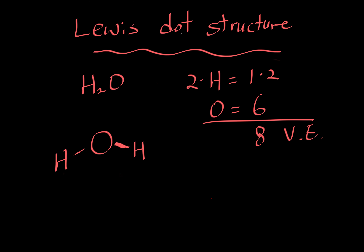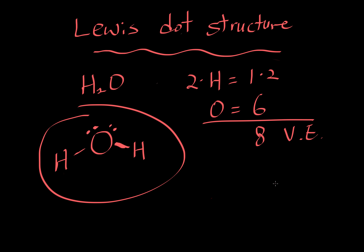We have used four electrons so far, with eight total allowed, so we have four remaining — and I'm going to place them on oxygen because water is a bent molecule, which I won't discuss in this video. Checking oxygen's octet rule: two, four, six, eight — satisfied. Total valence electrons used: one, two, three, four, five, six, seven, eight — everything's satisfied. This is how you draw the Lewis dot structure for water.